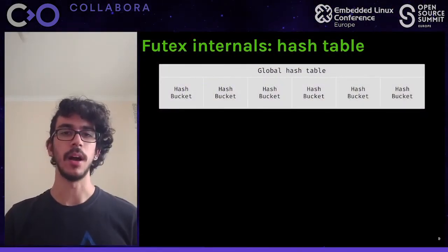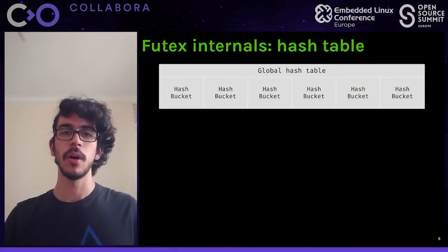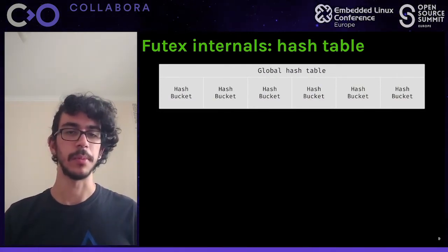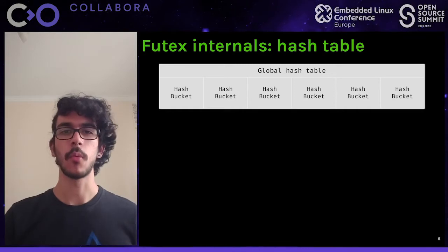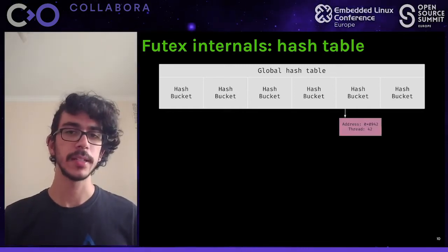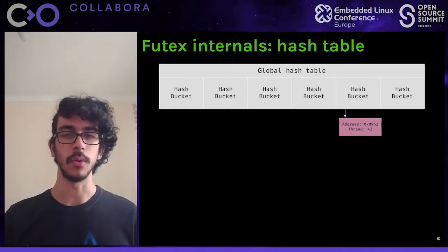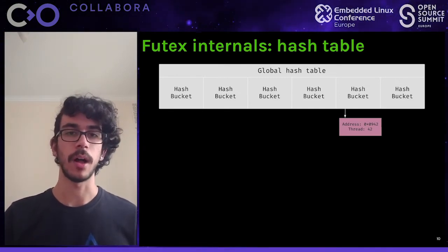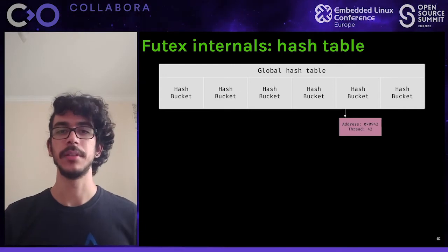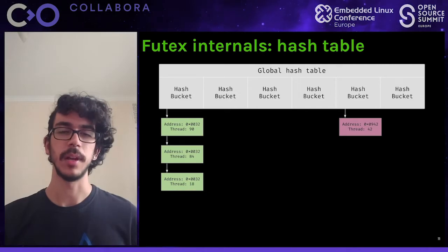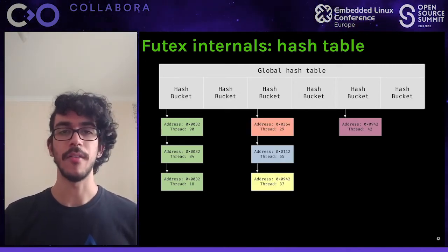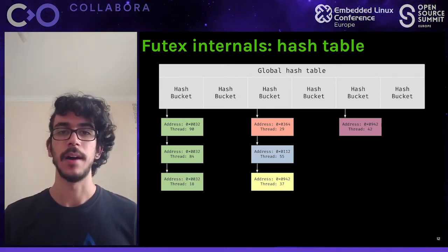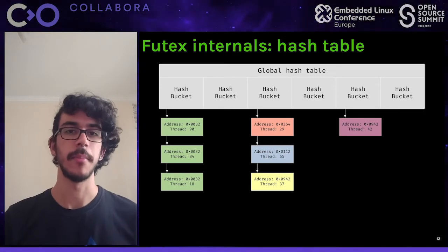In the current Futex implementation, there is a global hash table with many hash buckets. When you call wait, the hash function assigns you a bucket and adds you to a waiting list there. For the same address, all threads go to the same bucket, which makes the waker's job easier. However, you can also have hash collisions where different addresses end up in the same bucket.